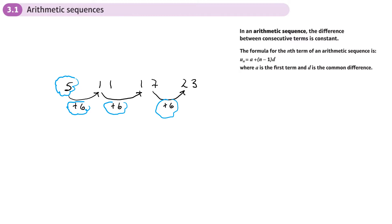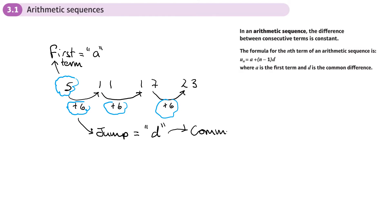Because those numbers are so important, we give them special letters. The first term we refer to as 'a', since it's the first letter of the alphabet. The jump between each value — whether positive or negative — we refer to as 'd'. You might wonder why 'd': it comes from 'common difference'. That common difference could be positive or negative, depending on whether your sequence goes up or down.